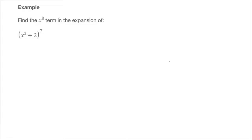The binomial expansion formula allows us to state that x squared plus 2 raised to the power of 7 equals the sum from r equals 0 up to 7.